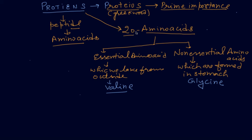The classification of amino acids: there are two types. One is essential amino acid and another is non-essential amino acid. Essential amino acids are those which we take from outside; they are not synthesized in our body. Non-essential amino acids are those which we generate in our body. Examples include glycine and valine. There are many more examples. This is the classification: non-essential and essential amino acids.